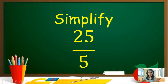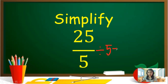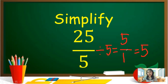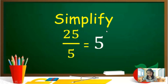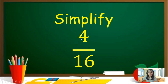Next, let us simplify 25 over 5. What did you notice? The numerator is bigger than the denominator, so maybe we can divide them. 25 divided by 5, the answer is 5. But if you just simplified them instead: get the GCF of 25 and 5, the answer is 5. If you divide both sides by 5, your answer will be 5 over 1. Any number divided by 1 is still the number, so the answer is 5. Next, simplify 4 over 16. The GCF is 4, so dividing both parts by 4, the answer will be 1 fourth.